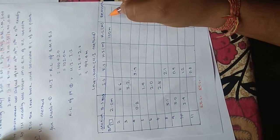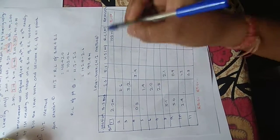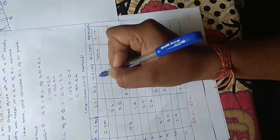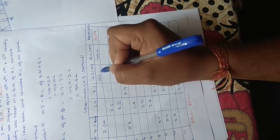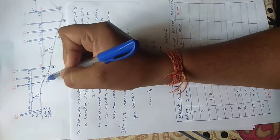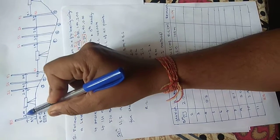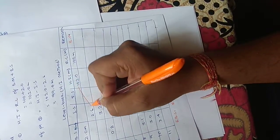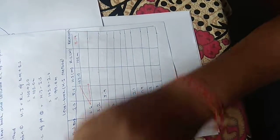The first point is the benchmark with RL = 100 meters. With backsight = 2.0 m, the Height of Instrument = 102.0 meters. From this HI, the reduced level at point 2 = HI minus intermediate sight = 102.0 minus 2.6 = 99.4 meters.